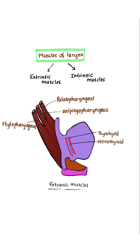There are five extrinsic muscles: palatopharyngeus, salpingopharyngeus, stylopharyngeus, thyrohyoid, and sternothyroid.